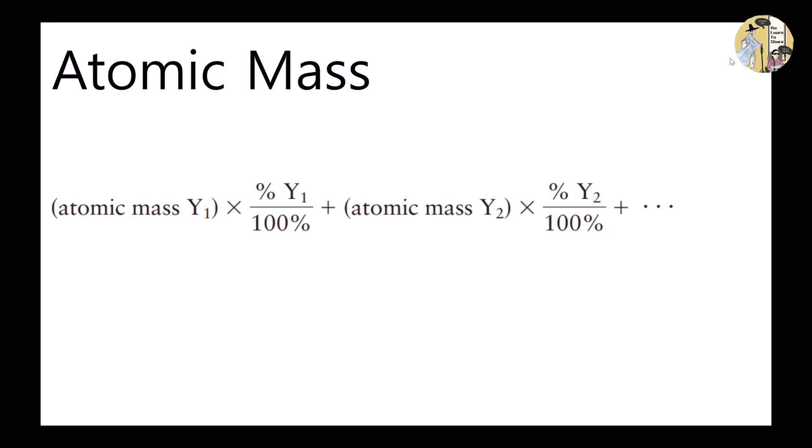Now we know how to determine relative masses of atoms, but how do we find out the exact mass of a single atom? Avogadro's number takes a big role in this process. It represents the number of atoms of an element in a sample whose mass in grams is numerically equal to the atomic mass of the element. The mass of an individual atom can be determined by dividing the atomic mass of an element with Avogadro's number.